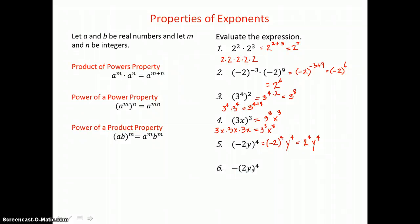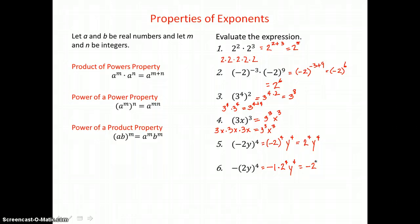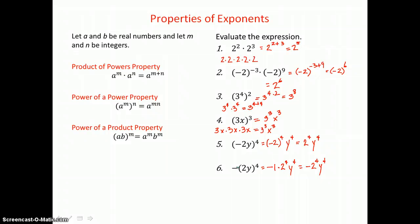In example 6, we have a product raised to a power, but we have a negative 1 multiplied to that product, and that negative 1 is not going to go away. Getting rid of parentheses, we have 2 to the 4th power and y to the 4th power, and negative 1 times that product is just going to be negative 2 to the 4th power times y to the 4th power. So notice that if our negative sign is inside parentheses, we could end up with a positive product, but if our negative sign is outside parentheses, we'll end up with a negative product.